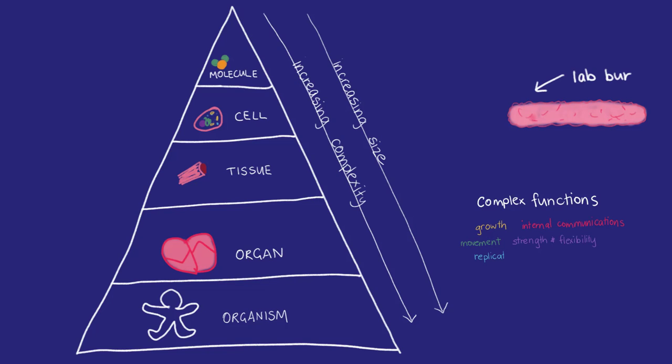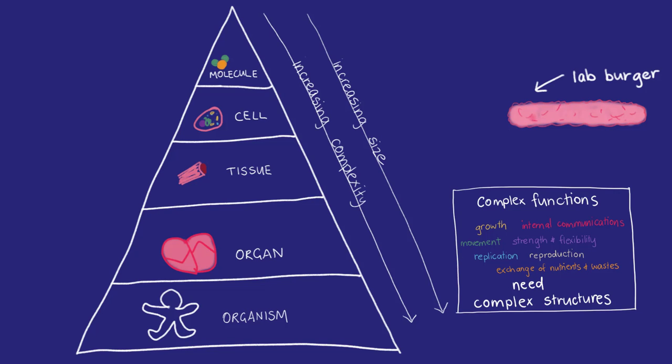the meat blob needs electrical stimulation to stimulate nerve impulses, scaffolding structures, systems for bringing in nutrients and taking away waste, and the introduction of fat cells.